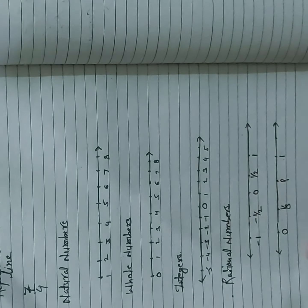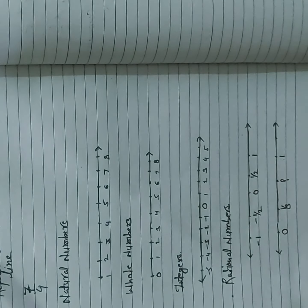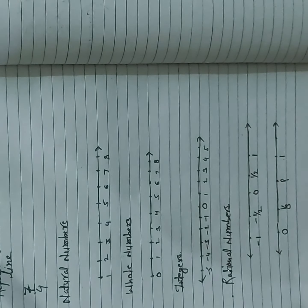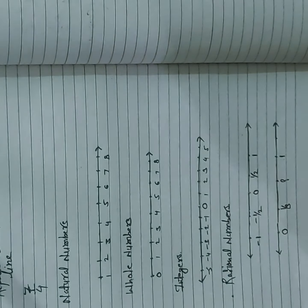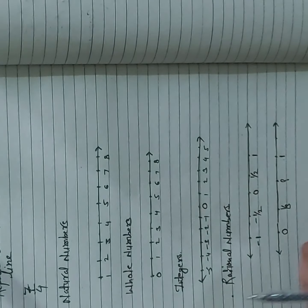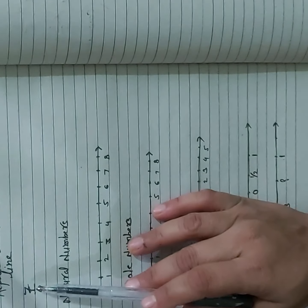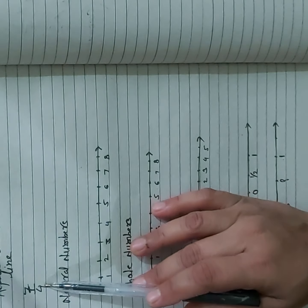So these are the basic things — the number lines for natural numbers, whole numbers, integers, and rational numbers. Now we will solve the first part, which is 7 by 4.